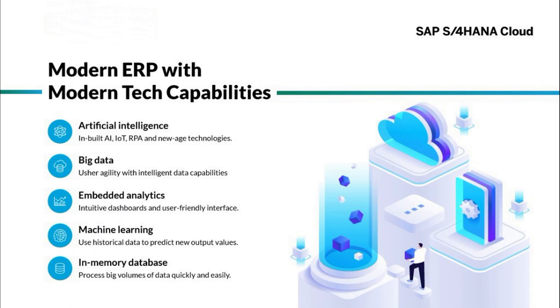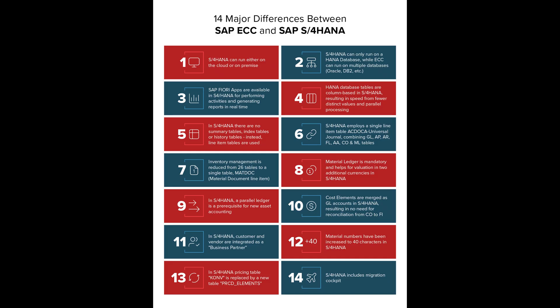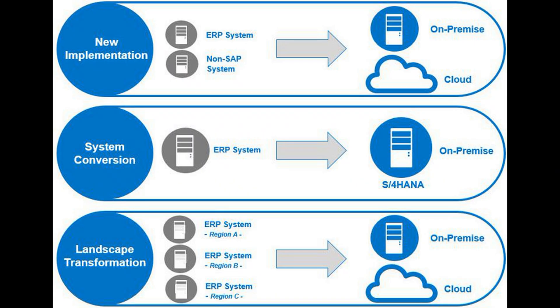In essence, SAP S4 HANA is a more modern, faster, and simpler ERP system designed to handle the demands of the digital economy, while SAP ECC represents a mature and robust yet more traditional ERP solution. The move from ECC to S4 HANA is a significant undertaking for any organization, involving not just a technical migration but also a business process transformation.